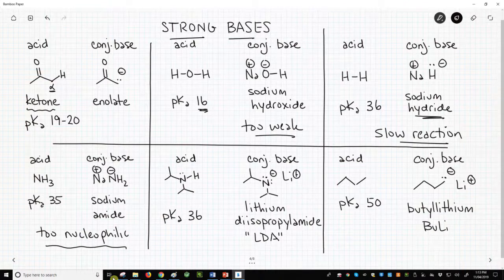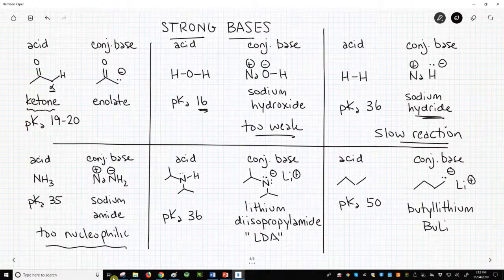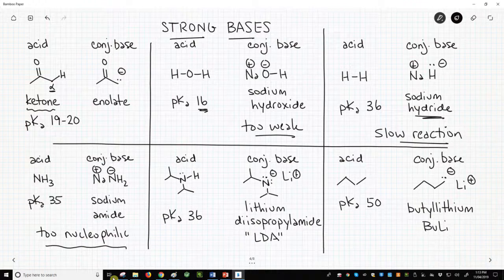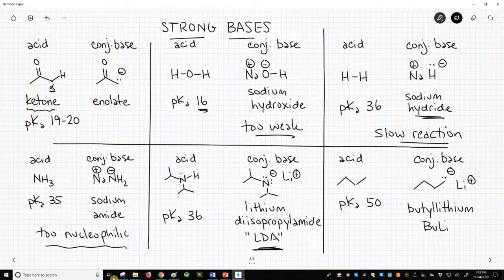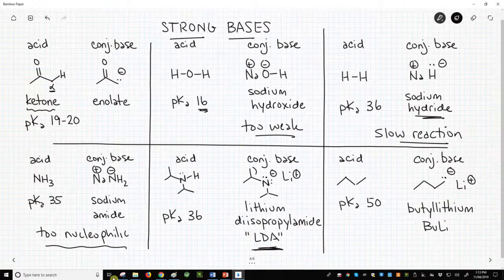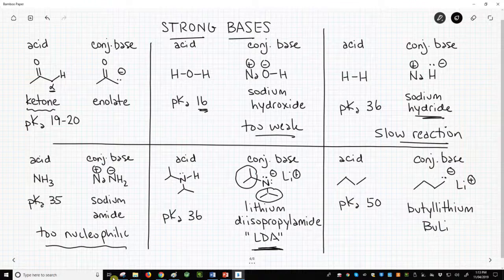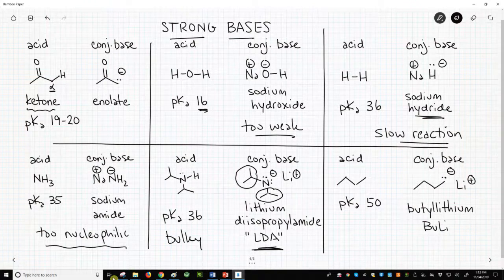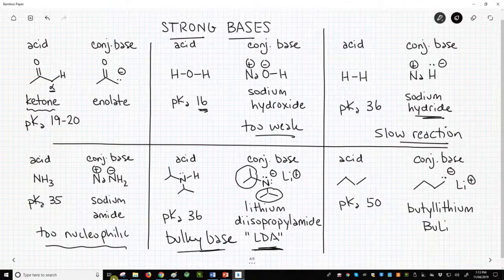Moving to the right, we have a new acid-base combination. The acid is diisopropylamine and the base is lithium diisopropyl amide, almost always called LDA for short. Diisopropylamine has a nice high pKa of about 35. LDA is a strong enough base. It also avoids being a nucleophile because of the steric bulk of those two isopropyl groups. This is a bulky base. It won't attack the ketone. LDA is the most common choice for deprotonating ketones to make an enolate.